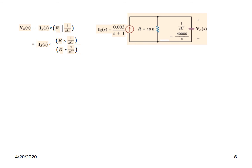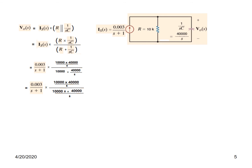Since they are in parallel, the equivalent impedance can be written as multiplication of the two divided by the sum of the two. Plugging in the values — R = 10,000 and the capacitor impedance = 40,000 over S — we take 10,000 common and they cancel. This simplifies to 40,000 over S in the numerator, and (1 + 4/S) in the denominator, and after cancellation of S terms we get 40,000 over (S + 4).